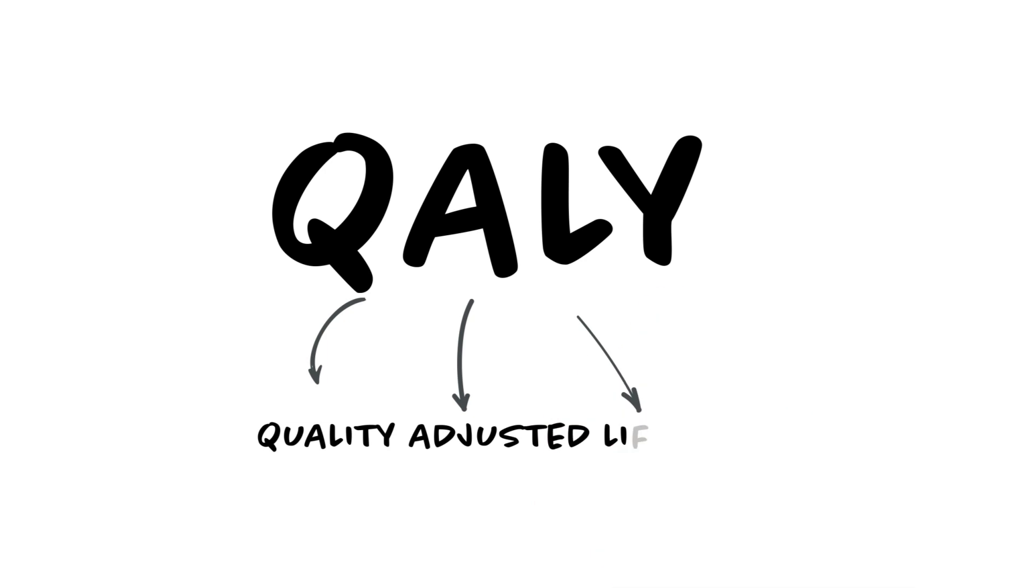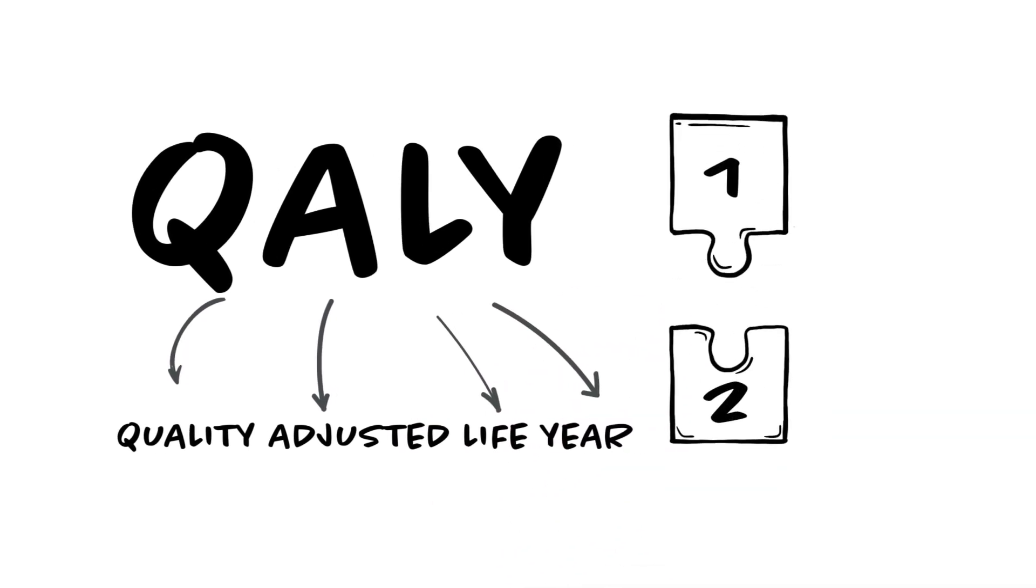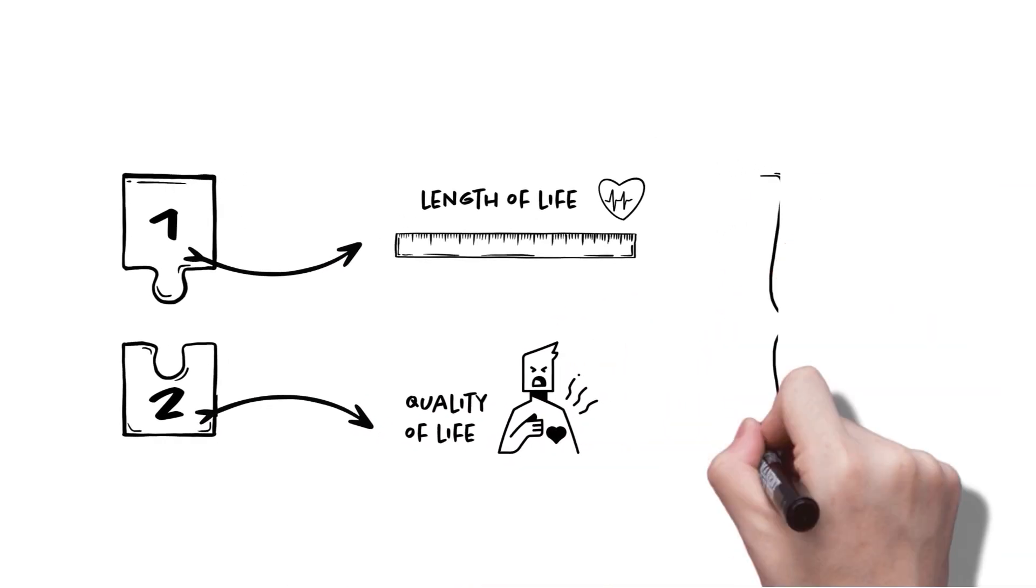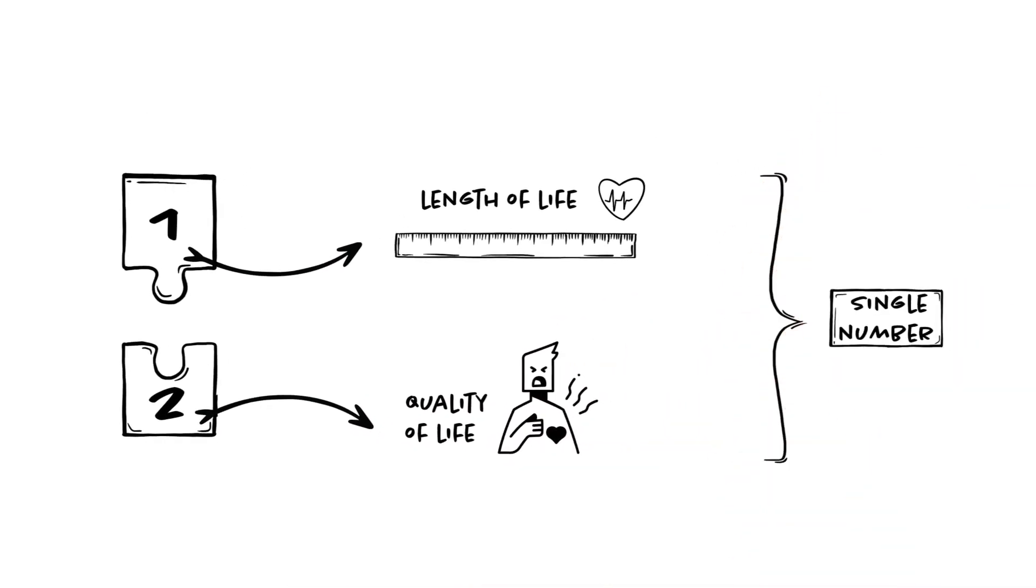QALY stands for Quality Adjusted Life Year. It combines two different elements, one length of life and two quality of life, into a single number. Useful, isn't it?